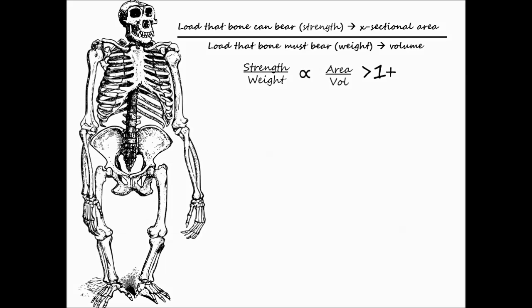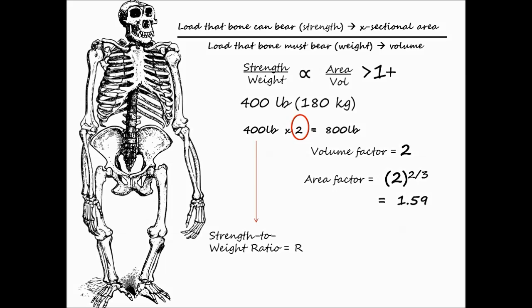The largest male gorillas in the wild weigh about 400 pounds. So the mythical 800 pound gorilla would imply a volume factor of 2. The area factor would be 1.59. Therefore, the strength to weight ratio for an 800 pound gorilla would put it at a whopping 20% disadvantage. A 400 pound gorilla is menacing but an 800 pound gorilla would struggle to even stand up.